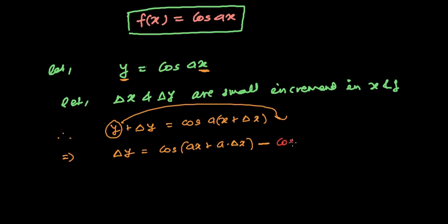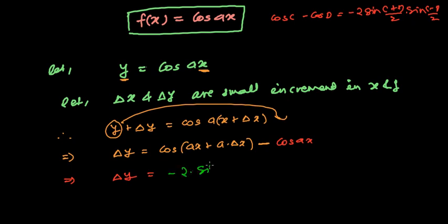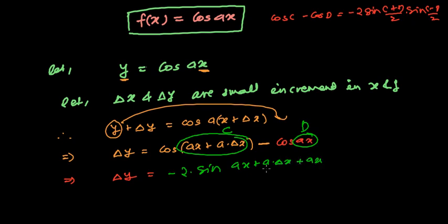Alright, so I'm writing cosine of ax. In the next step, delta y equals to — here we have a formula: cos C minus cos D equals to minus 2 sin((C+D)/2) · sin((C-D)/2). We're going to use this formula. So it will be now minus 2 sine of (ax + a·delta x + ax)/2 times sine of (ax + a·delta x − ax)/2.